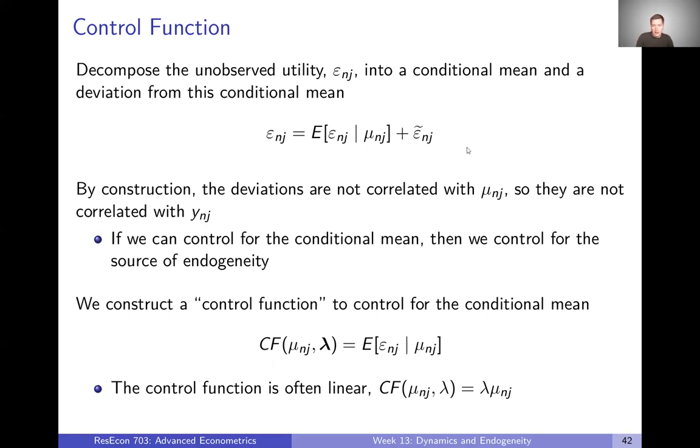By construction, these epsilon tildes are not correlated with mu because all of the correlation is subsumed into this conditional expectation term. So if epsilon tilde is not correlated with mu, then it's also not correlated with Y. If we can get our model to the place where the error term is epsilon tilde instead of epsilon, then we've solved our endogeneity problem.